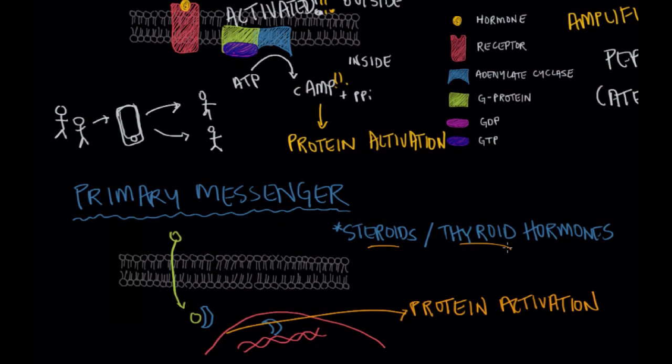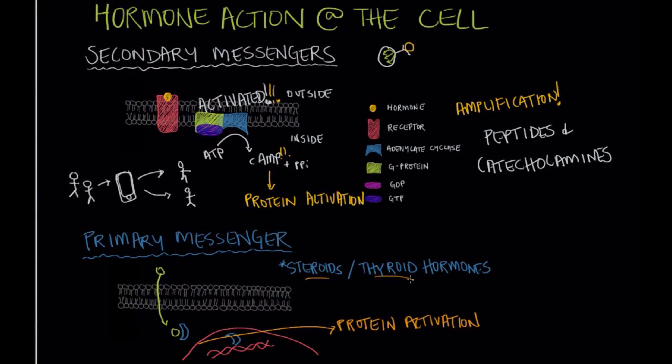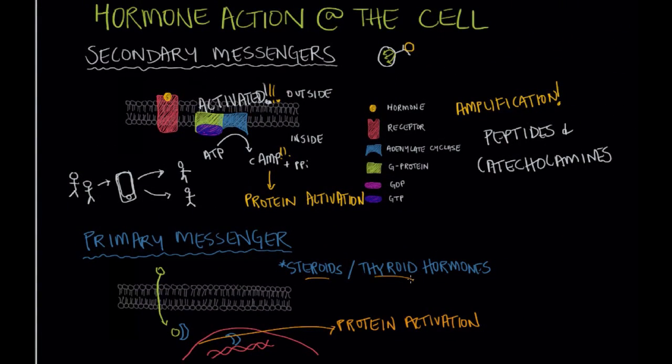But anyway, these are both primary messengers and secondary messengers. And those are the two main processes by which hormones act on the cell that they're created to target.